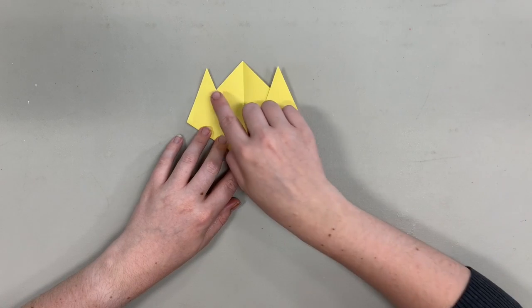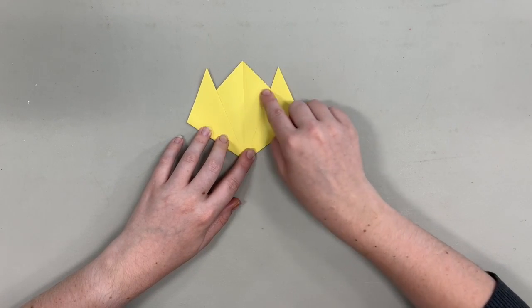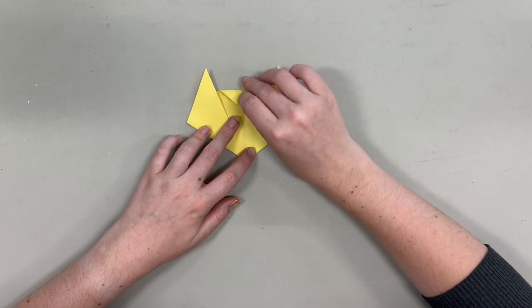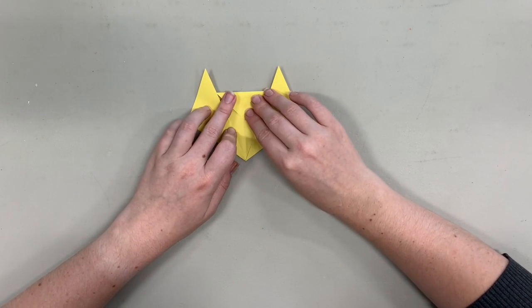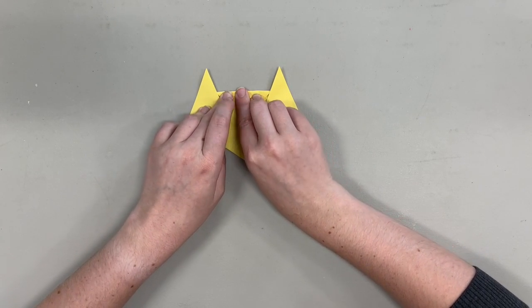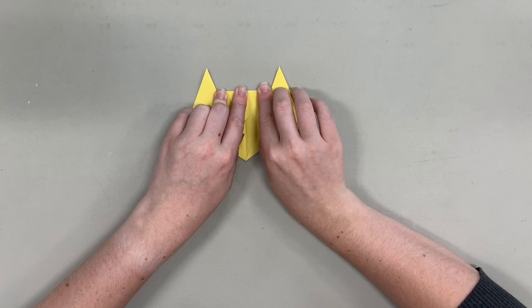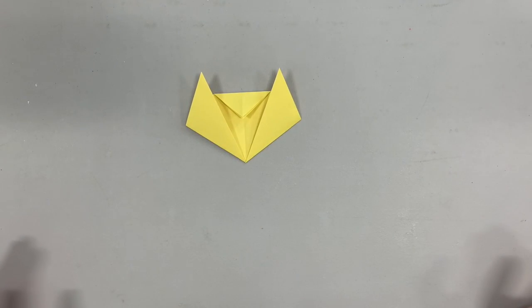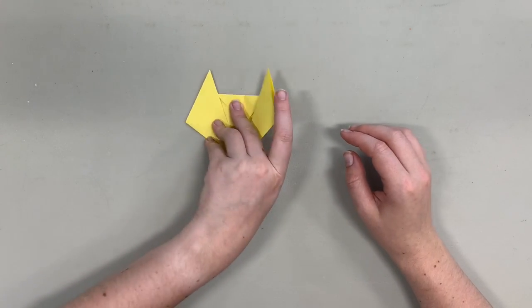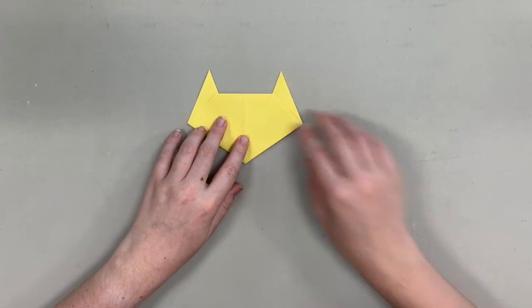We're almost done. We just need to flatten the top of our cat head so we're going to fold down the tip. Take both sides, line up the lines, and fold it down so the top of our cat head is straight. You may say this doesn't look like much of a cat, but we're going to flip it over, looks a little more cat-like now, and take our marker and draw on the face.